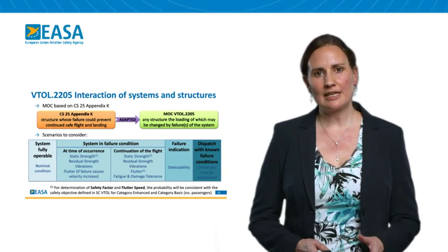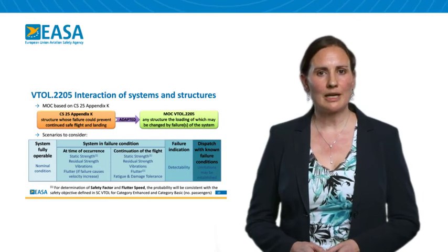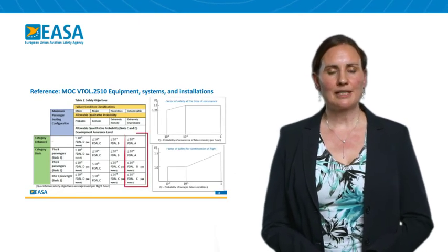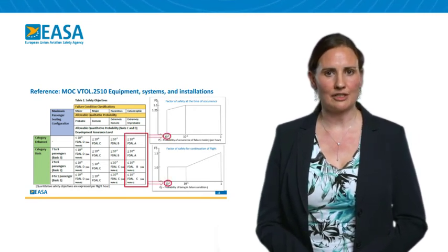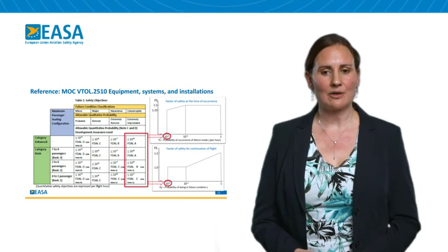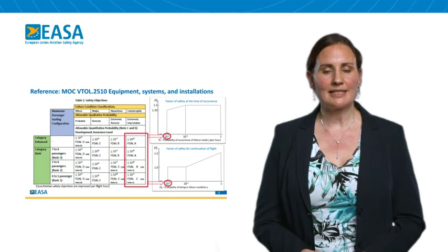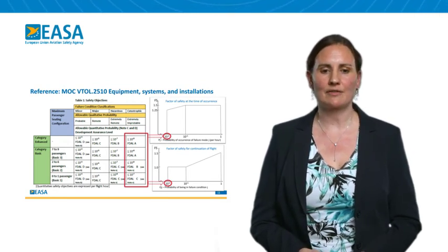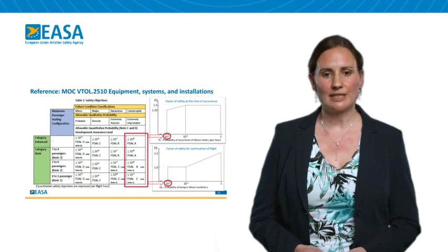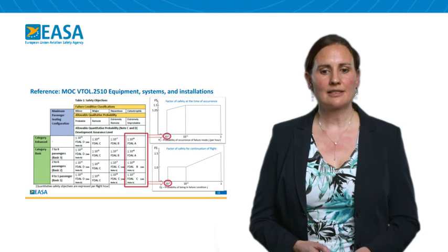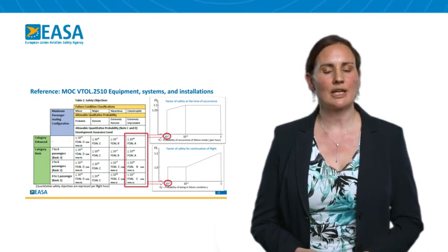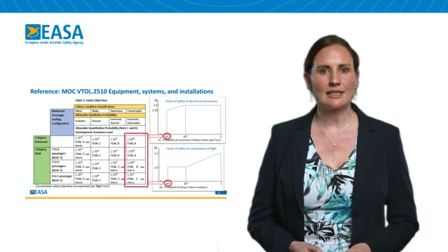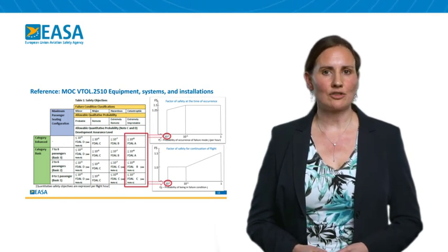This MOC also addresses failure indication or detectability and dispatch with known failures. As explained, the factor of safety and flutter speeds may be modified based on the probability of failure or being in the failed condition. The minimum probability 10 to the minus x should be replaced by the safety objective associated to the category and number of passengers of the aircraft — reference MOC VTOL 2510. For example, for Category Enhanced, 10 to the minus x should equal the 10 to the minus 9 safety objective for catastrophic. For Category Basic, for up to one passenger, 10 to the minus x should be 10 to the minus 7, consistent with the catastrophic threshold for this class.